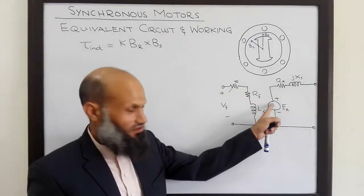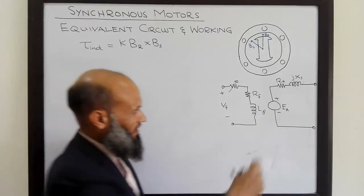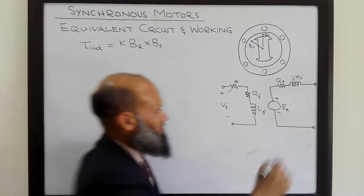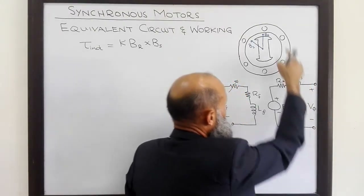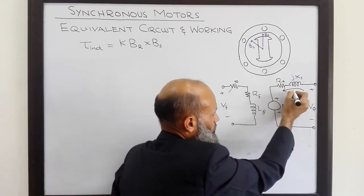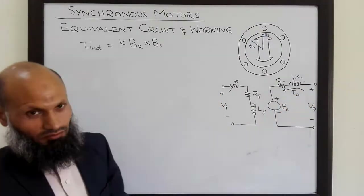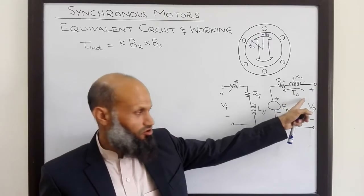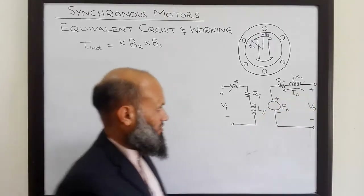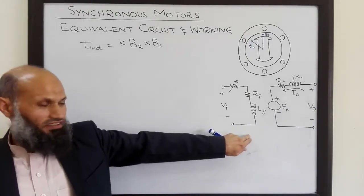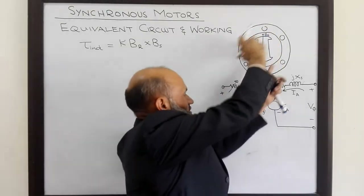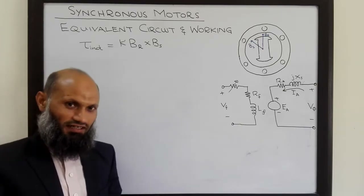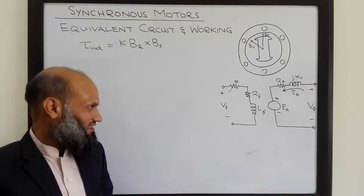In the case of a generator, this internal generated voltage causes the current to flow into the load connected to the generator. In the case of motors, we have an external voltage source connected to the motor, and that causes the current to flow in the motor. So basically, here is the difference between the equivalent electrical circuit of a synchronous generator and that of a synchronous motor: the direction of armature current. This is the per-phase equivalent electrical circuit of a synchronous motor. We have three such phases, and these phases can be connected either in delta configuration or in star configuration.